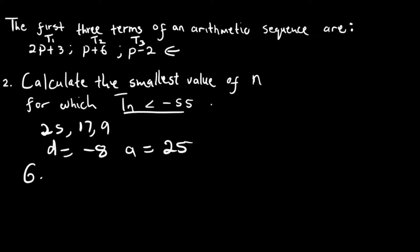So now we're going to use the general formula, which is tn equals a plus into n minus 1 d. And therefore, where there's tn, we're going to put minus 55. And then here, at a, we know a is equal to 25, plus into n, we don't know, minus 1, d is minus 8.